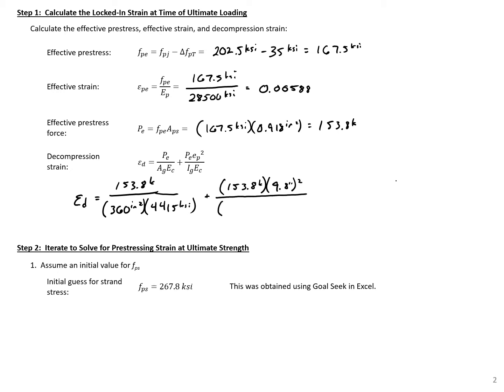divided by gross moment of inertia, 18,706 inches to the fourth, and again times our modulus, 4,415 KSI. It gives us a strain here of 2.76 times 10 to the negative fourth.